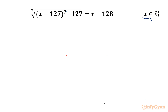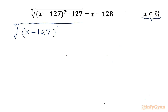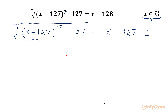We have to calculate all real solutions. So let's get started by considering our equation as the 7th root of (x minus 127) whole power 7, minus 127, equal to x minus 128. We can split the right side as minus 127 minus 1. Now I will consider our substitution, so let us consider x minus 127 equal to a.